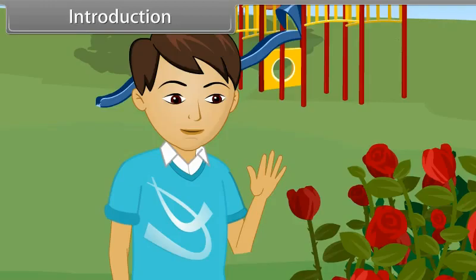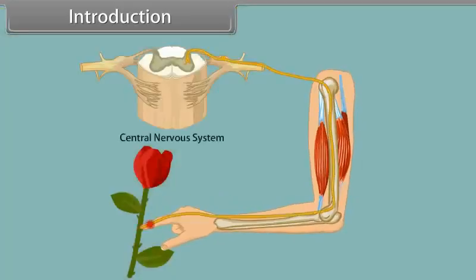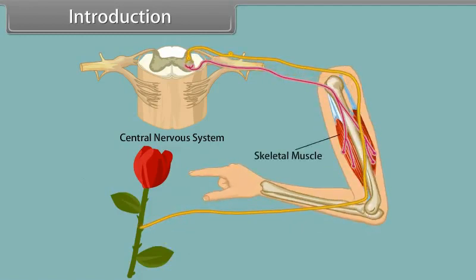Let's see more closely. When he touches the stem of the flower, the thorn on it pinches him and sensors detect stimuli present below the skin. This stimuli passes to central nervous system and in response, the skeletal muscles contract and he withdraws his hand.